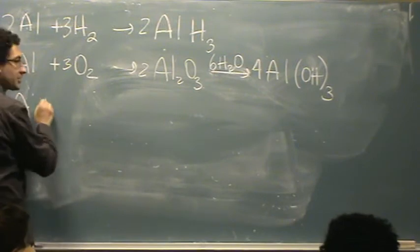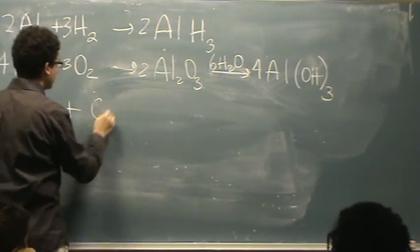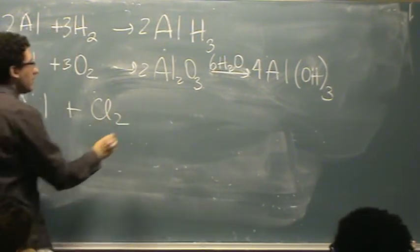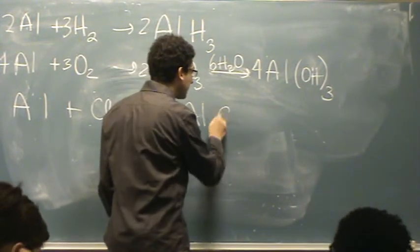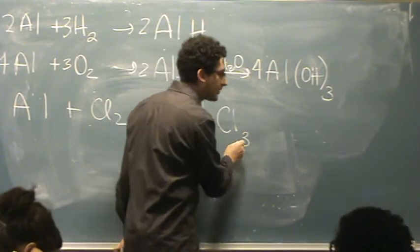We're on a roll with aluminum, so let's just rock and roll with it. Cl2, that'll make aluminum, it's a 3 plus, with a Cl, which is minus 1, so AlCl3.